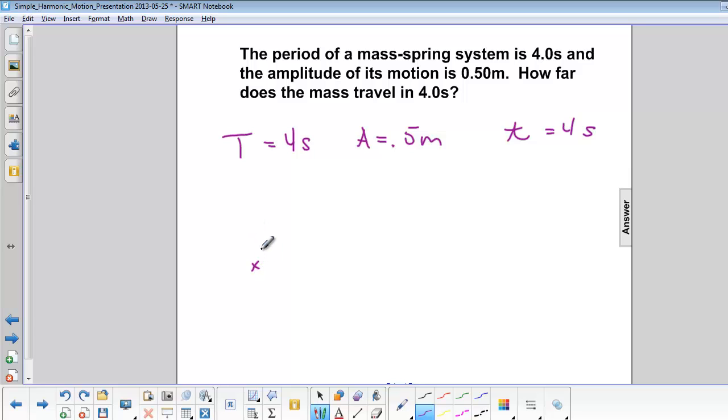If it starts at its equilibrium point, it will move up to where it's most compressed, down back to equilibrium point, down again to where it's most stretched, and back to the equilibrium point. That is one complete cycle.